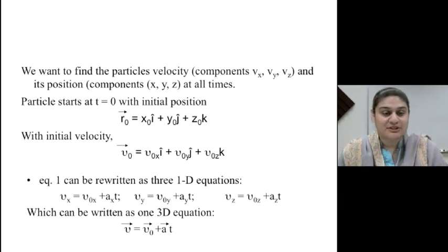In terms of their components, they will be written as vx, vy, vz. And in terms of one single equation, they can be reduced down to v-vector equals v-naught vector plus a-t, where t is the elapsed time.